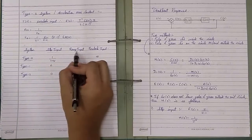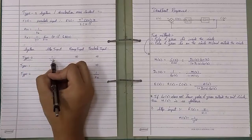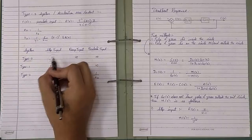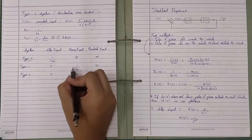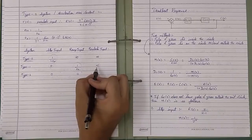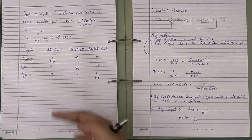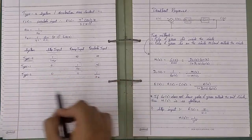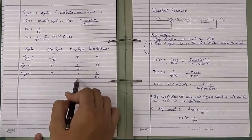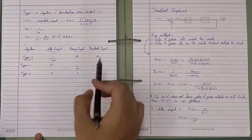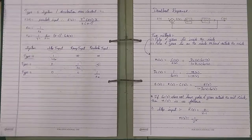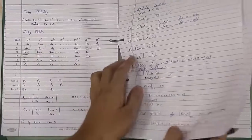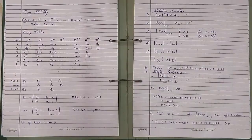To summarize with a table: for a Type 0 system, e_ss = 1/(1+Kp) for step input, and infinity for ramp and parabolic inputs. For Type 1, e_ss = 0 for step, 1/Kv for ramp, and infinity for parabolic. For Type 2, e_ss = 0 for step and ramp, and 1/Ka for parabolic input. If you have any doubts, comment below. A PDF of Jury stability and steady state error will be posted in the description. Thank you.